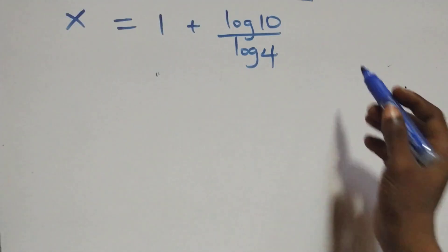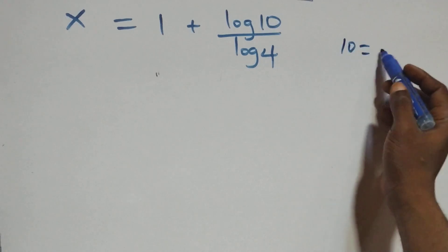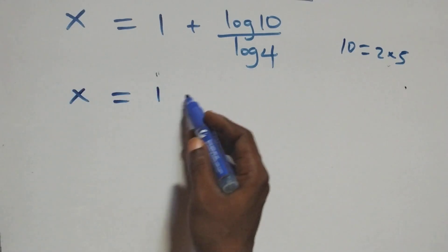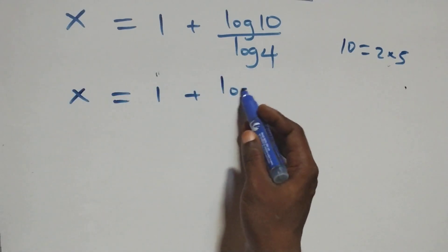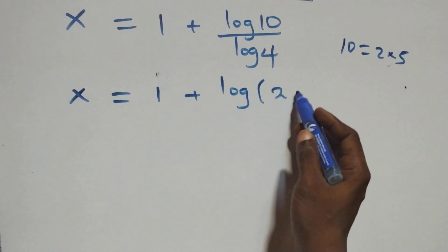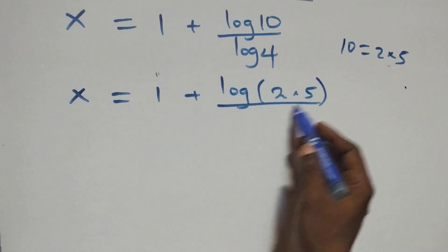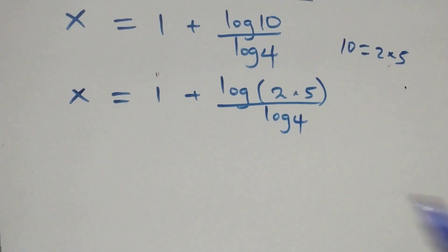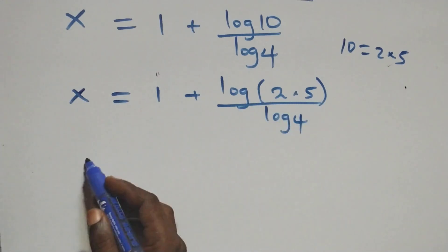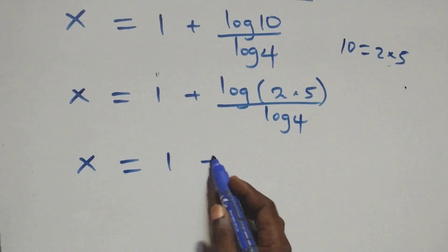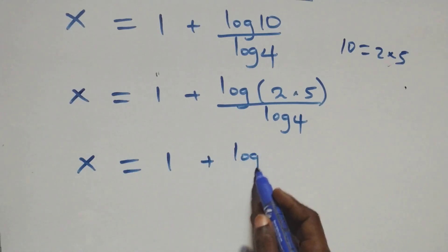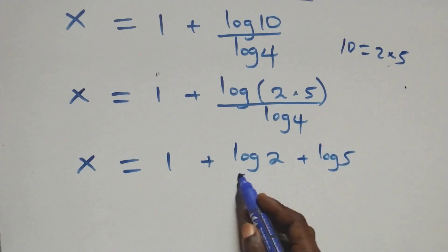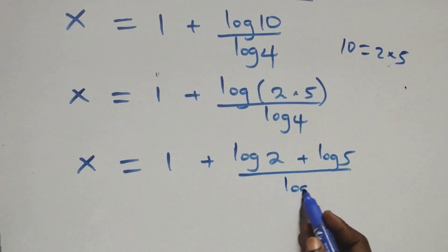Also, we can express ten as two times five, which implies what we have becomes x equals to one plus log of two times five, over log four. This again follows the product rule of logarithms, so x equals to one plus log two plus log five, over log four.